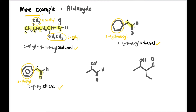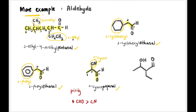Next, we have CN and C double bond O — two functional groups: cyano and carbonyl. We need to check priority. The carbonyl (CHO / aldehyde) has higher priority than cyano. So the parent name is propanal (three carbons), and cyano is the substituent at carbon two. Full name: 2-cyanopropanal.